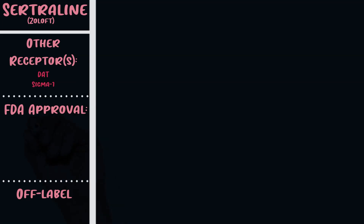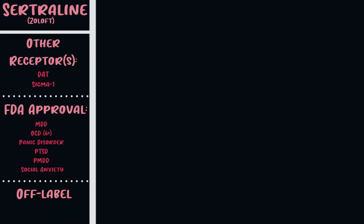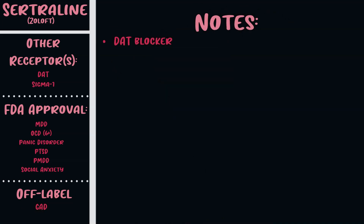The other receptors that Zoloft hits are DAT and sigma-1. It's FDA approved for depression, OCD in kids over six, panic disorder, PTSD, PMDD, and social anxiety. It's used off-label for generalized anxiety disorder and other anxiety disorders. Zoloft blocks DAT, the dopamine active transporter responsible for dopamine reuptake. Blocking it increases dopamine, though it's unclear if Zoloft has enough blockade for full clinical relevance.